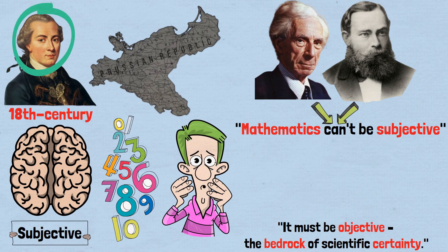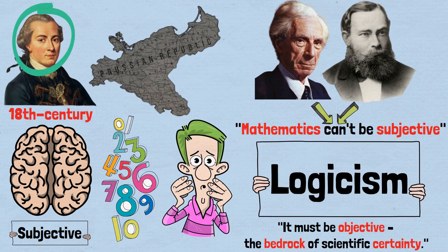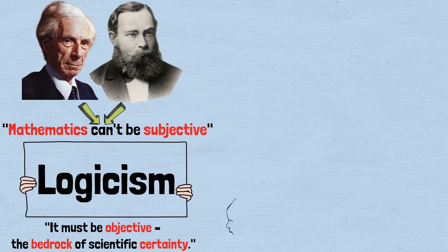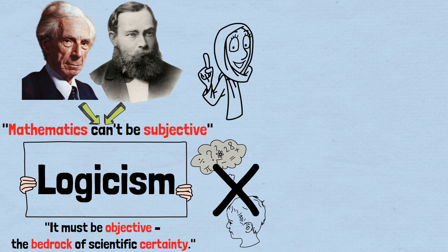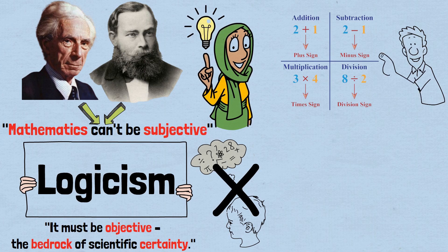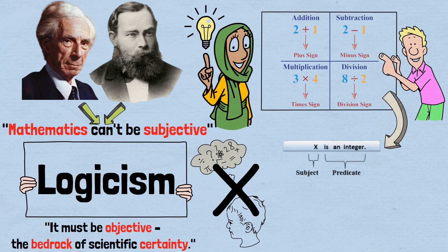To counter Kant's view, they developed a position called logicism. According to logicism, mathematics wasn't just some mental construction. It was a branch of logic itself. They believed that arithmetic, the most basic type of mathematics, could be reduced to first-order logic and set theory.